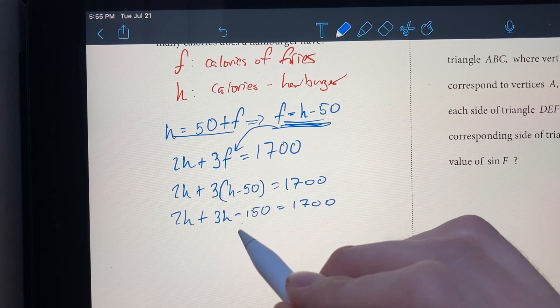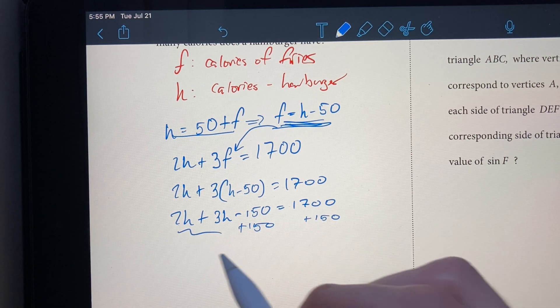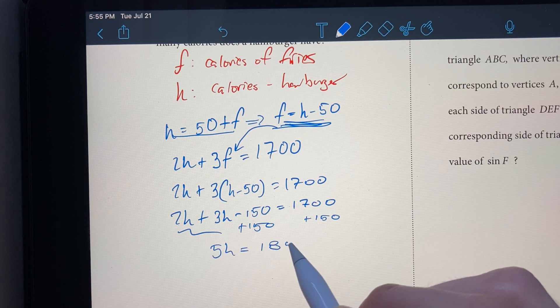If you add 150 to both sides and also add 2H and 3H, we get 5H is equal to 1,850.